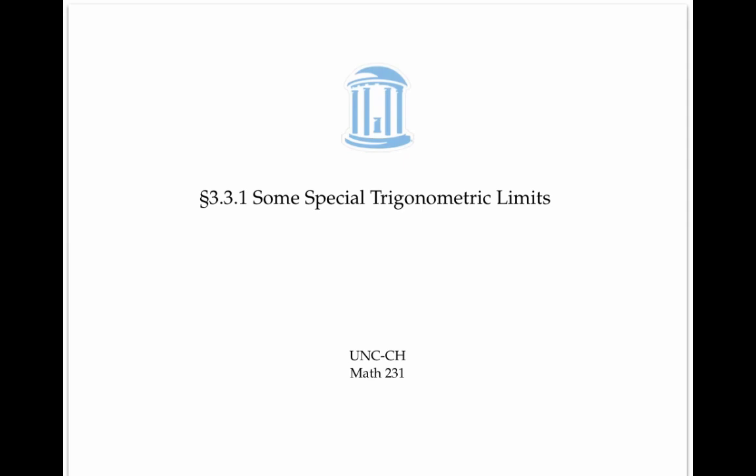This video is about two limits involving trig functions that turn out to be very useful. Namely, the limit as theta goes to zero of sine theta over theta, and the limit as theta goes to zero of cosine theta minus one over theta. These limits turn out to have really nice simple answers, as long as we keep theta in radians, not degrees.